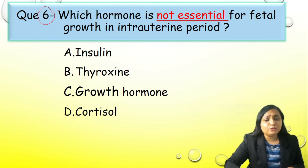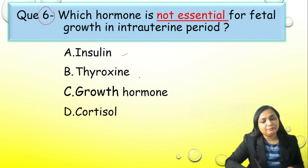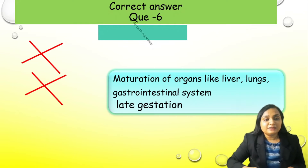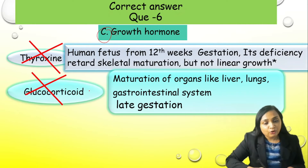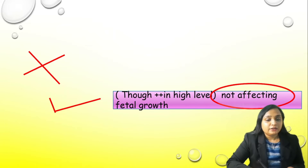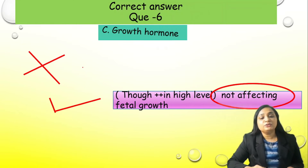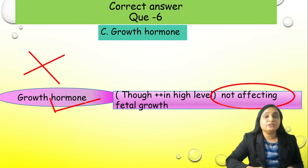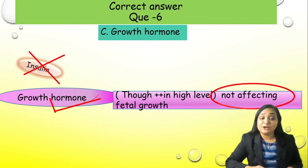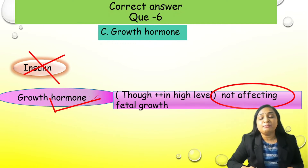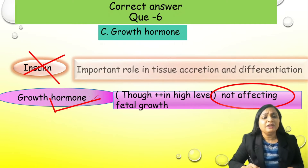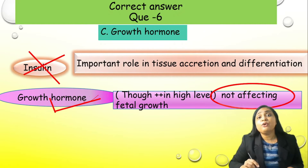Question number 6: Which hormone is NOT essential for fetal growth in the intrauterine period? Options: A) insulin, B) thyroxine, C) growth hormone, or D) cortisol. Correct answer is C, growth hormone. Thyroxine, glucocorticoid, and insulin all have some effect on growth. Only growth hormone has no effect on growth in the intrauterine period — despite its name. The key catch in the question is the phrase 'intrauterine period.'